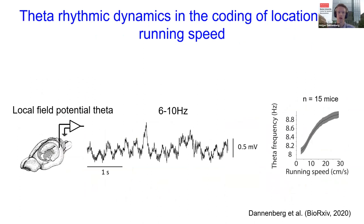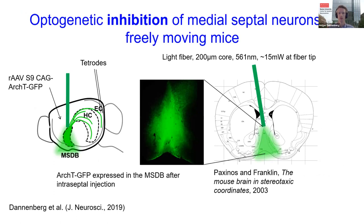This data indicates that grid cells may use another speed signal. One alternate speed signal in the hippocampus and entorhinal cortex is an oscillatory signal via theta oscillations — in particular, the local field potential theta frequency increases with running speed. Previous experiments have shown that both theta oscillations and grid cell firing depend on medial septal inputs. Since grid cells may integrate running speed information, we tested the hypothesis that the medial septum is important for conveying the speed signal to the entorhinal cortex.